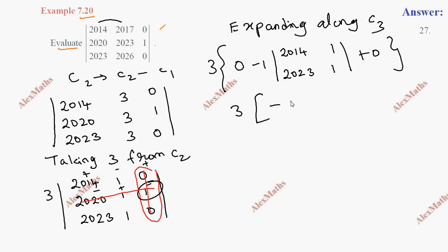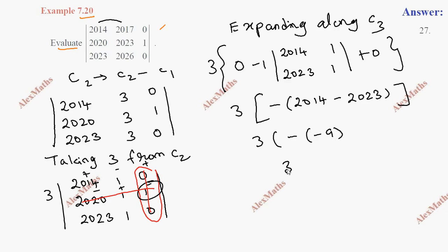Bracket open minus: 2014 minus 2023 — that is a subtractive number. Minus of minus 9. Total: 3 into 9. Answer: 27. So when numbers are in an arithmetic progression, we can use reduction properties, then expand. So the answer is 27.